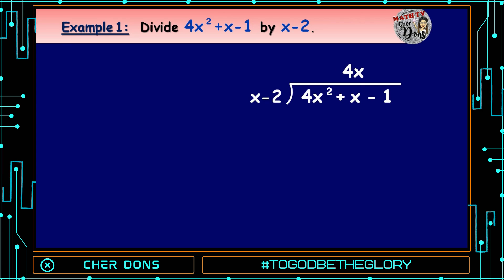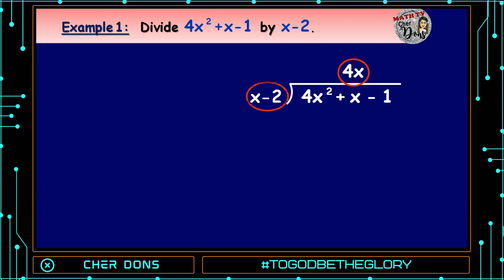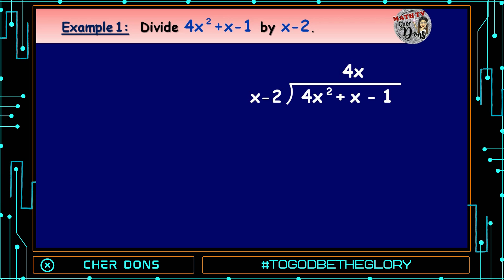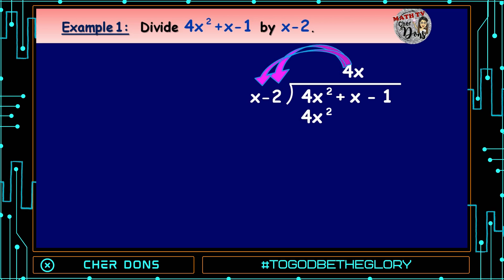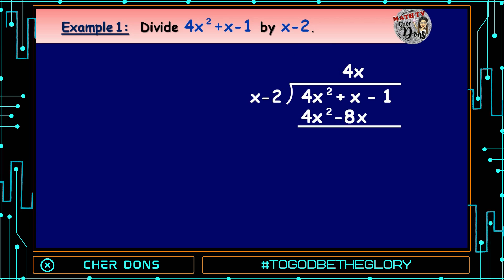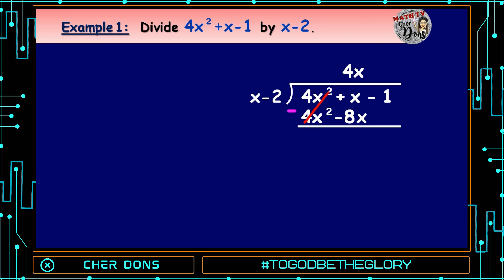Step 3: We multiply the quotient by the divisor. So, 4x times (x - 2): 4x times x equals 4x², and 4x times -2 equals -8x. Then Step 4: Subtract the result from the dividend. 4x² - 4x² = 0, and x - (-8x) = 9x.